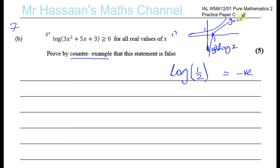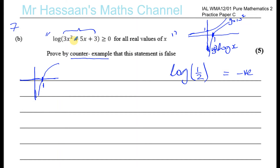Even if it was 2 to the power of x, 3 to the power of x — it doesn't matter — it will have that same shape and go through (0, 1). So for the log curve, if x is less than 1, the log value will be negative. So this expression will be negative as long as 3x² + 5x + 3 is less than 1.